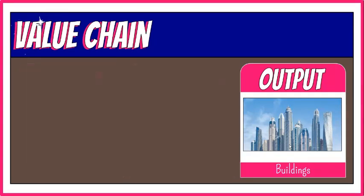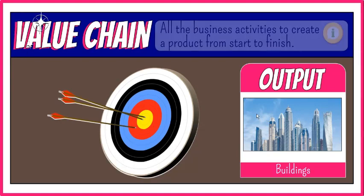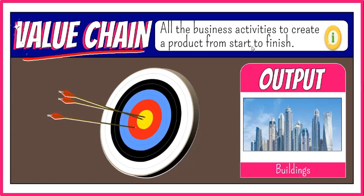Providing value to customers and other stakeholders is the primary goal of any organization. All activities that take place in an organization, including those that involve computers, should contribute to its mission. The series or chain of activities that an organization performs to transform inputs into outputs in such a way that the value of the input is increased is known as the value chain.